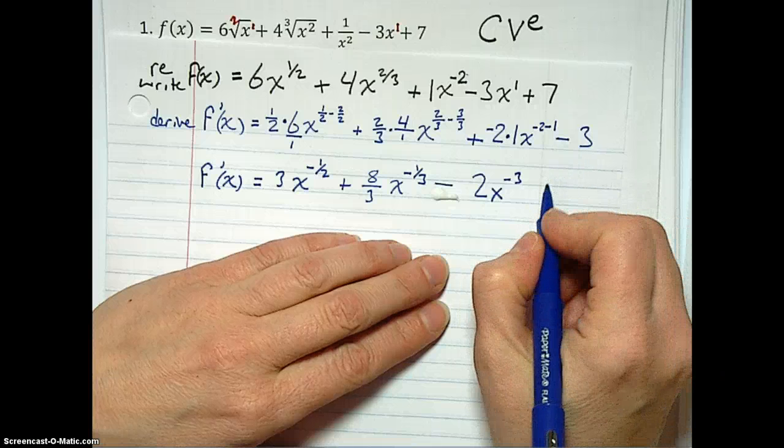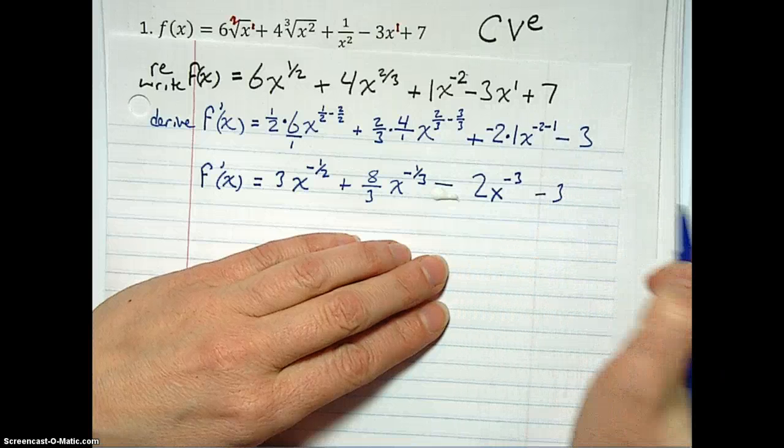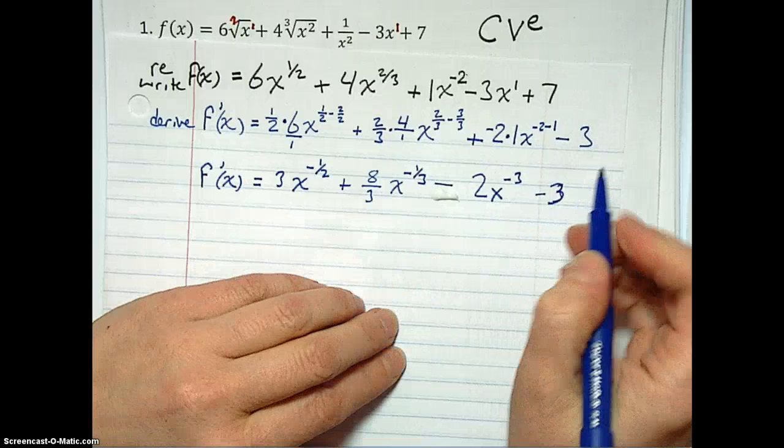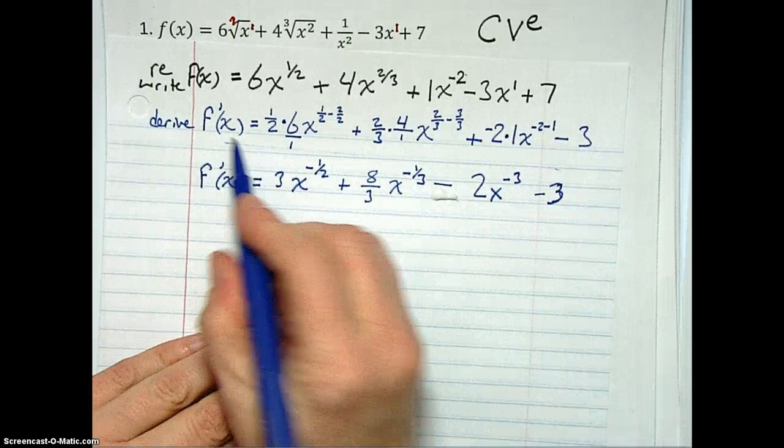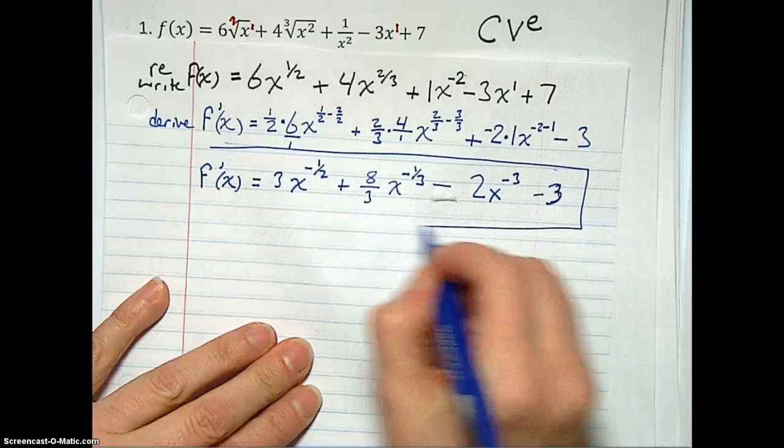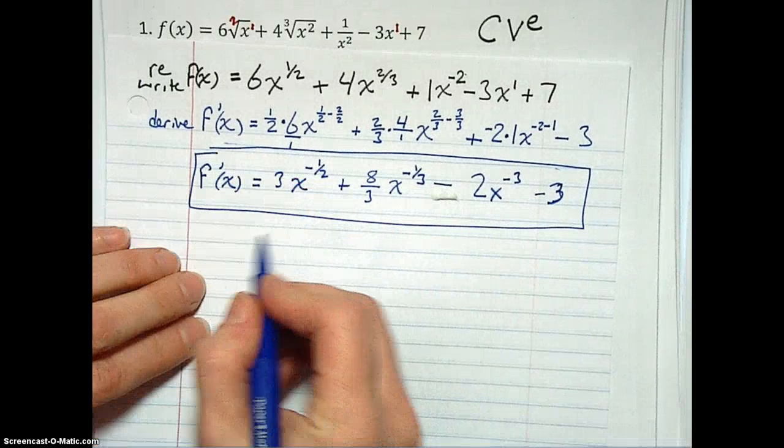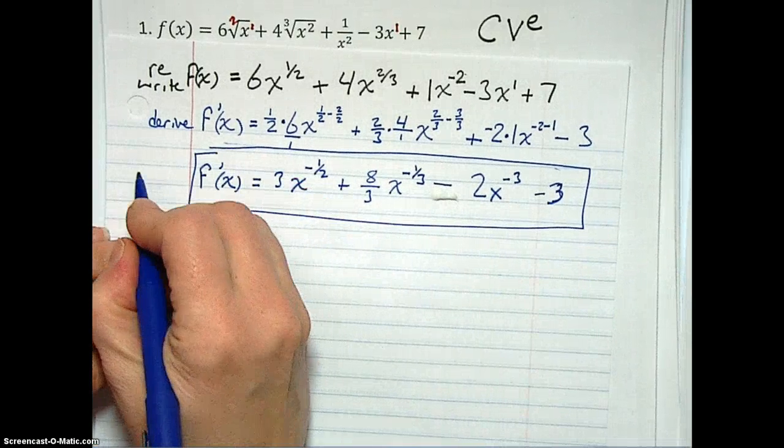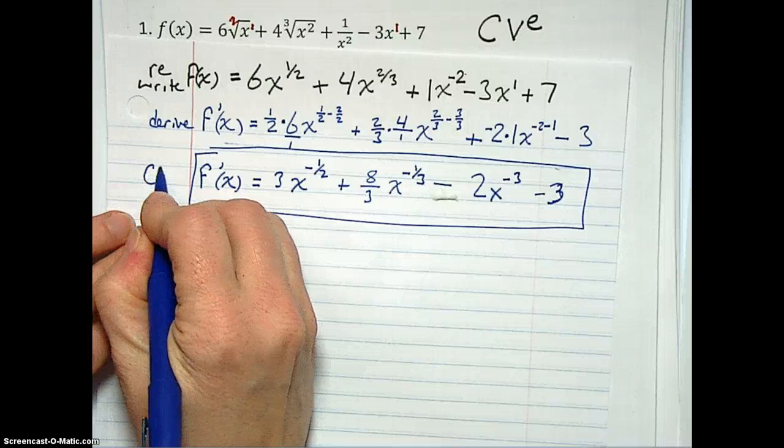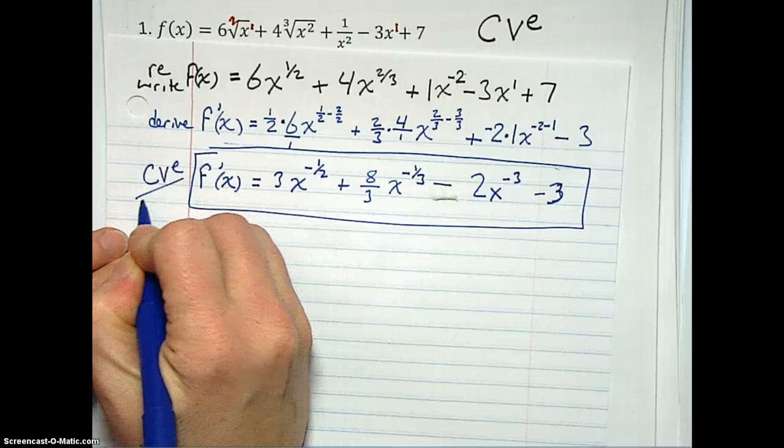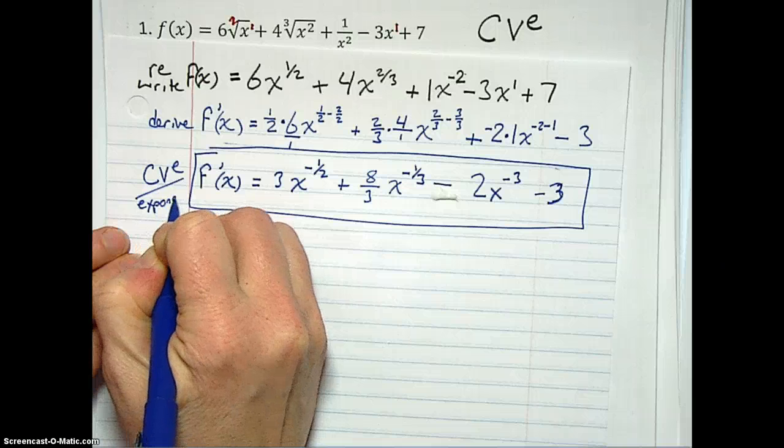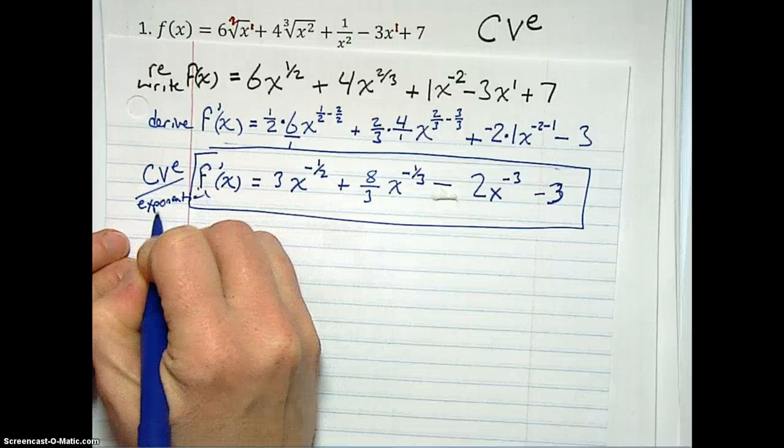And then the minus 3 doesn't need any kind of new rewriting to make it look prettier. So this right here can be our answer to our derivative, or you can be written, this is exponential or CVE form. CVE slash exponential form.